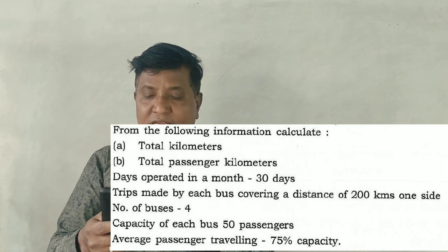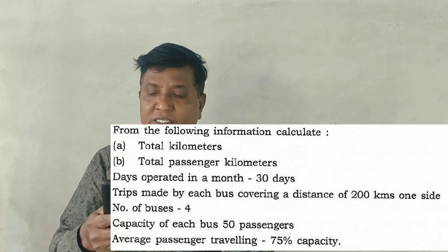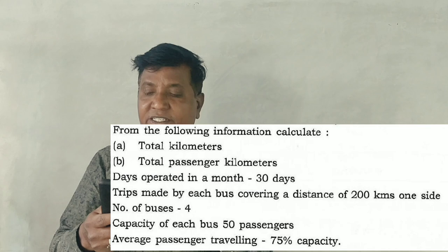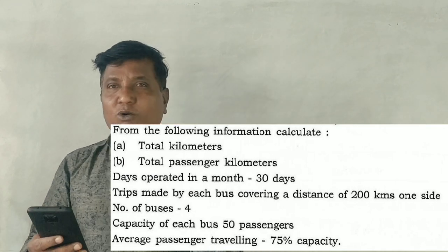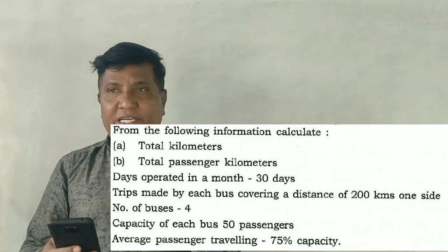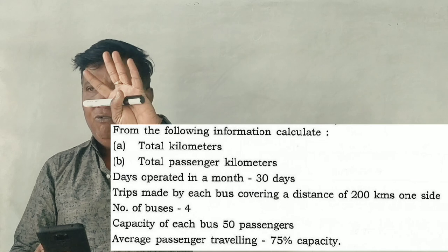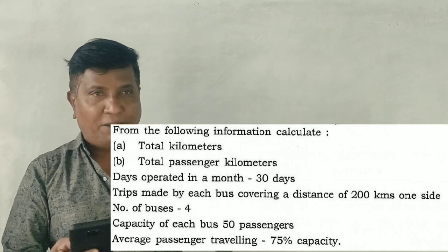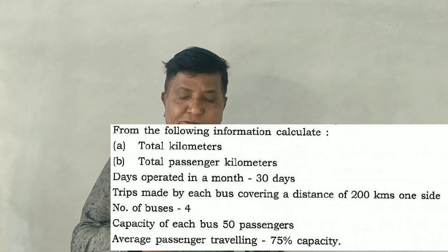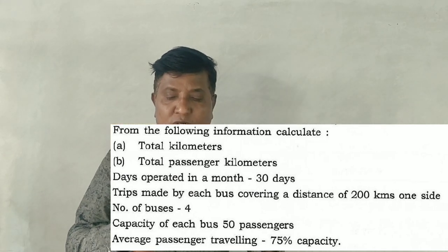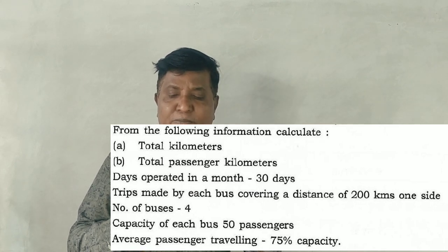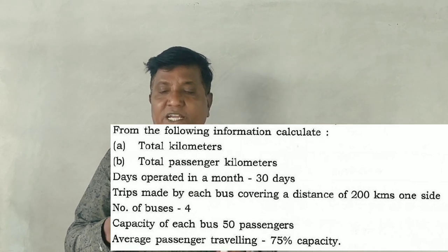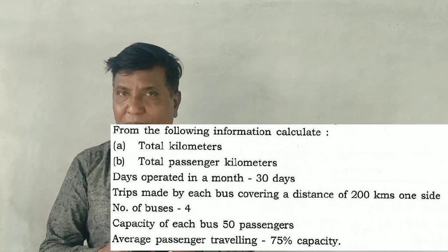So, trips made by each bus covering a distance of 200 kilometers one side — going and coming back is 200 plus 200, so 400 kilometers per trip. Number of buses is 4. Capacity of each bus is 50 passengers. Average passengers travelling is 75 percent capacity.